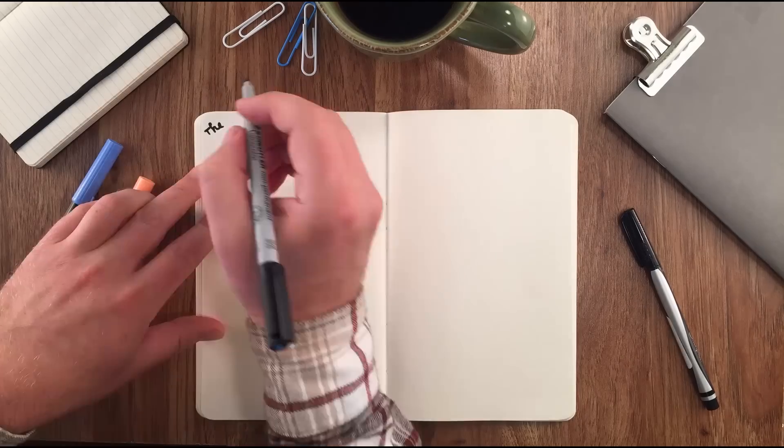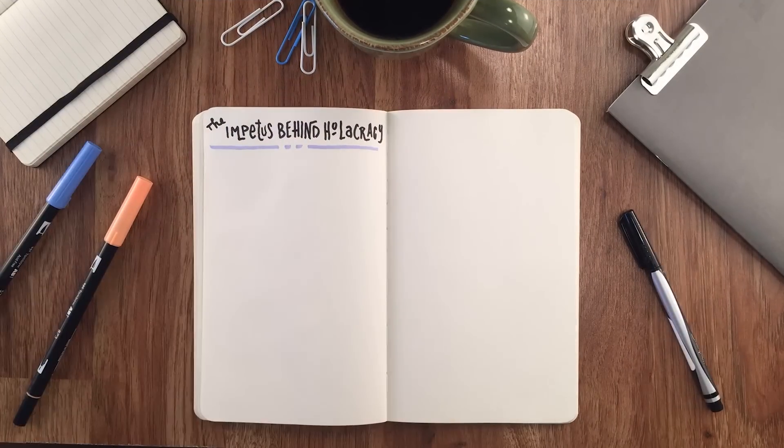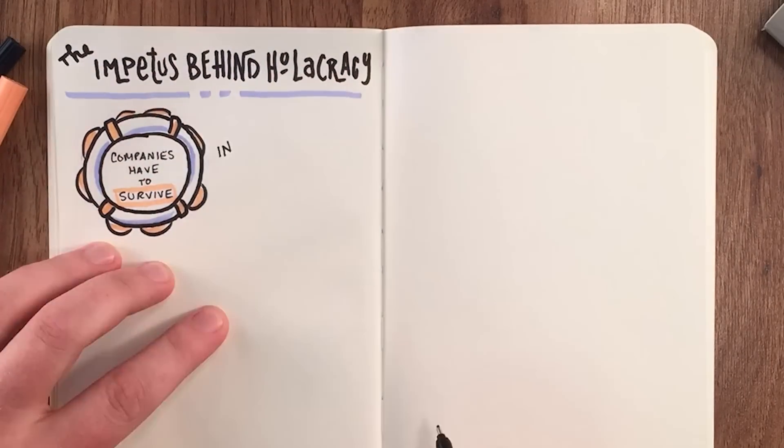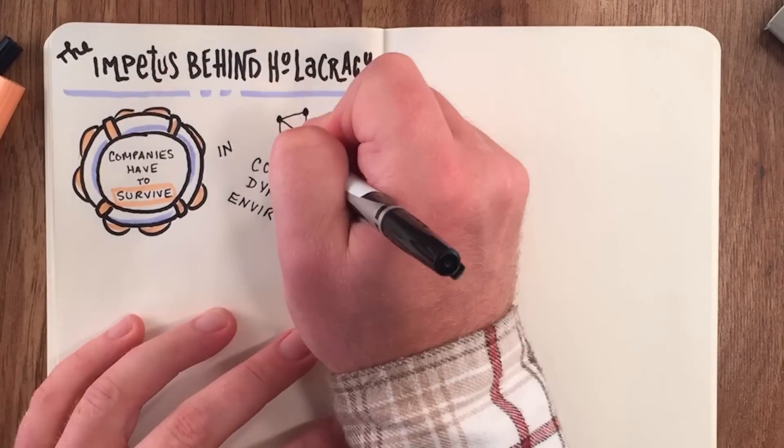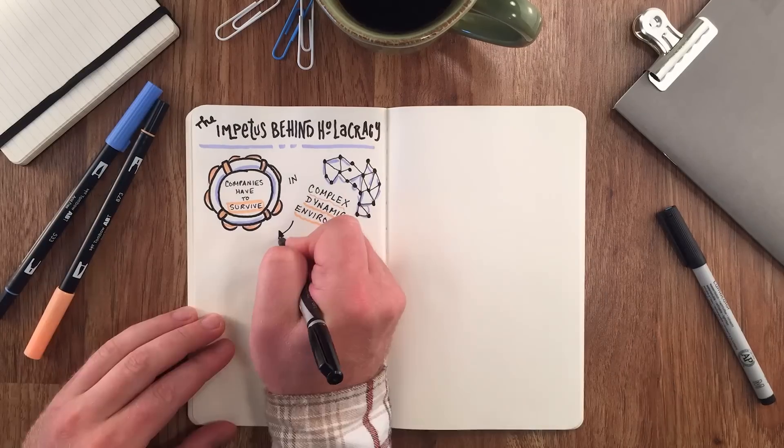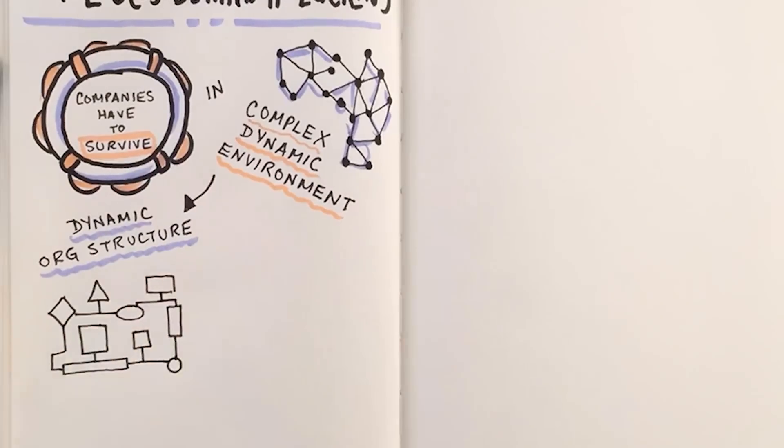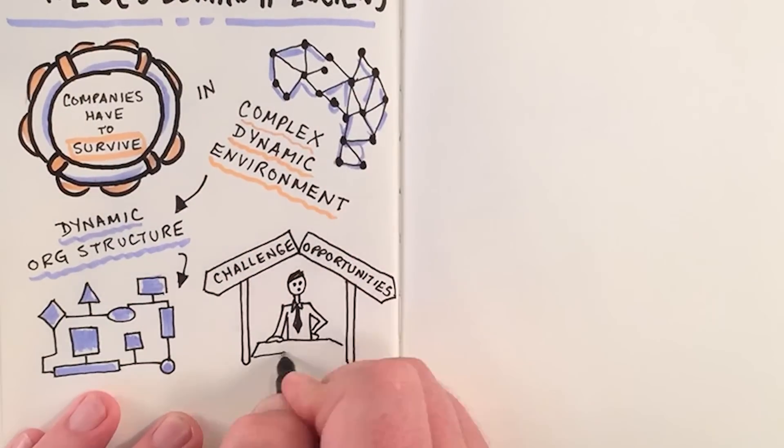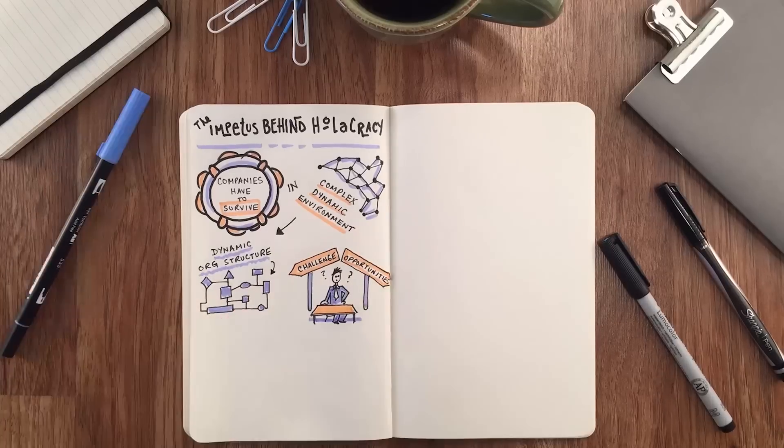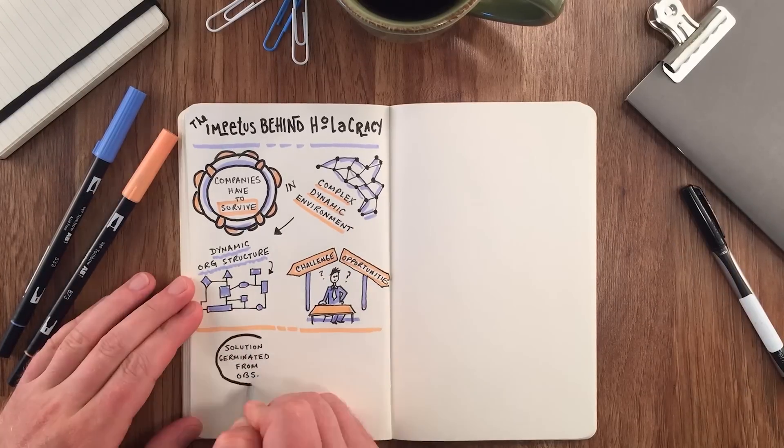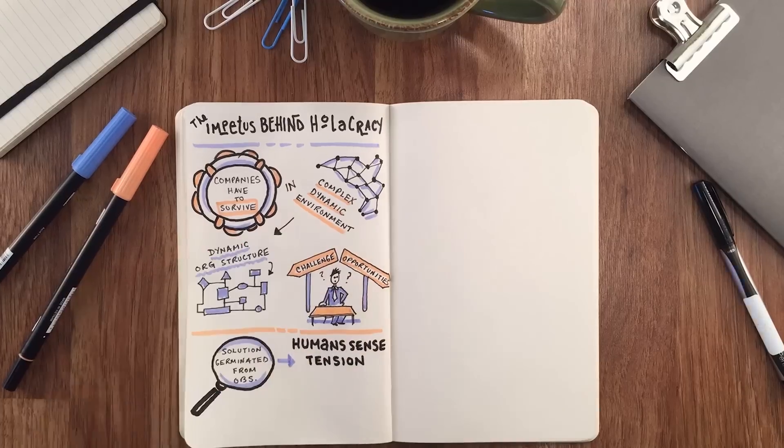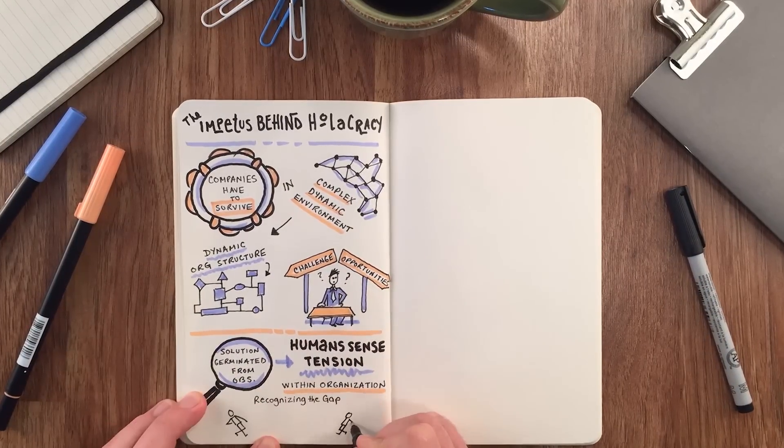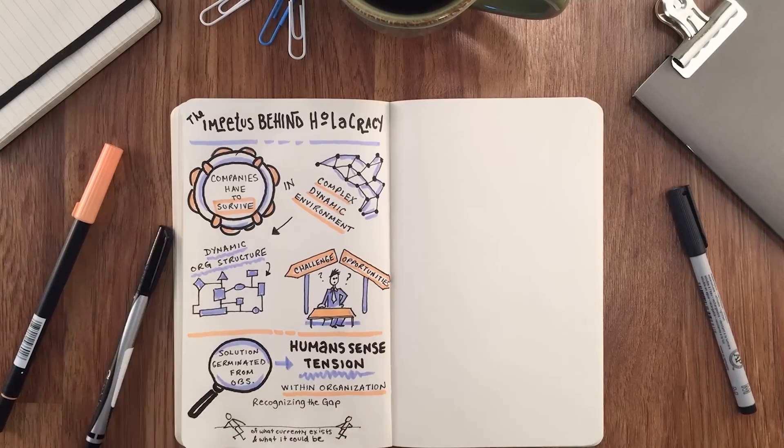The impetus behind Holacracy. The main idea behind this new system is that today's companies have to survive in an increasingly complex and dynamic environment that requires an equally dynamic organizational structure in order to properly address new challenges and opportunities. The solution germinated from the observation that humans have a unique ability to sense tension within an organization, which is defined as recognizing the gap of what currently exists and what could be - the current reality and the sense potential.